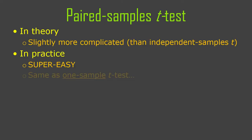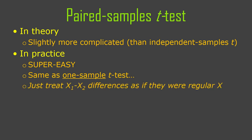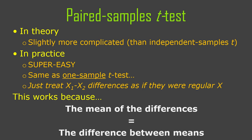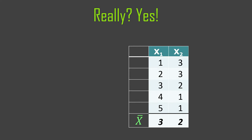In theory, the paired sample setup is slightly more complicated, because you have to account for correlations between the observations at time 1 and time 2 — they're correlated automatically because the same participants produced them. However, in practice this complication completely disappears, because we just create difference scores. Every person has two observations, and we just subtract one from the other, reducing things to one value. This works because the mean of the differences is the same as the difference between the means.